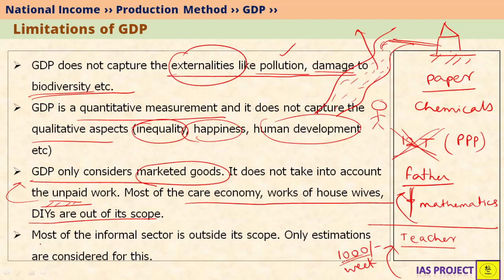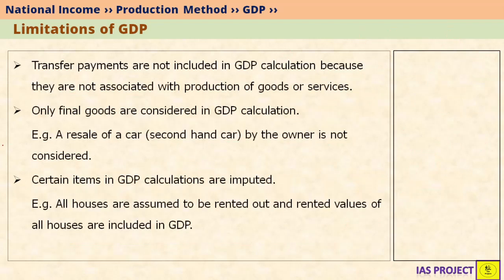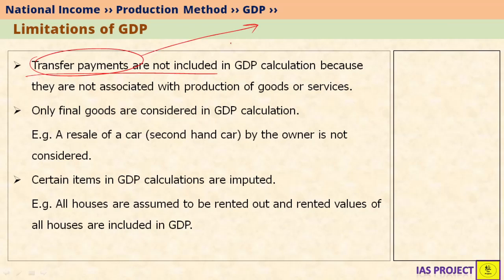Most of the informal sector is outside the scope of GDP — only estimations are considered for it. Also, transfer payments are not included in GDP. We have seen what transfer payments are in previous lectures; if you are not aware, please refer to previous videos whose link is given in the description.